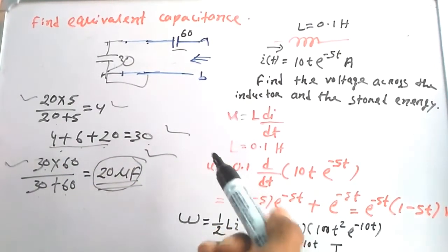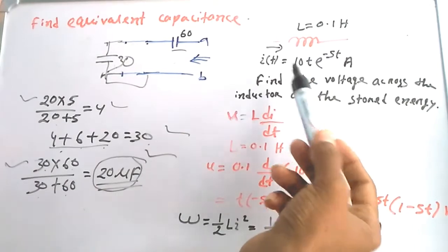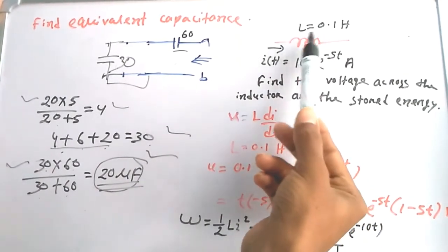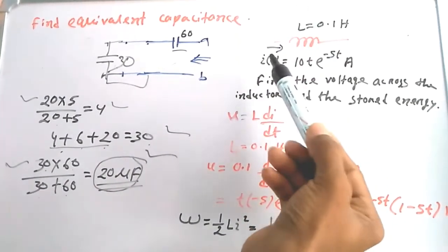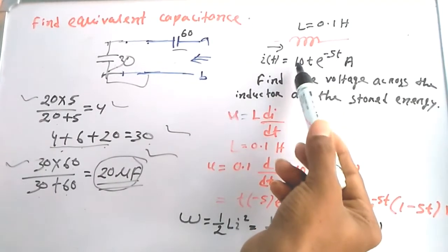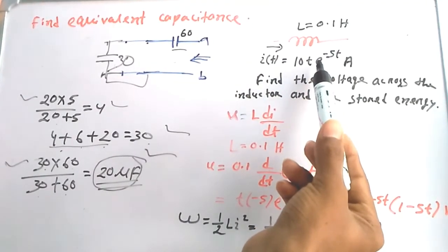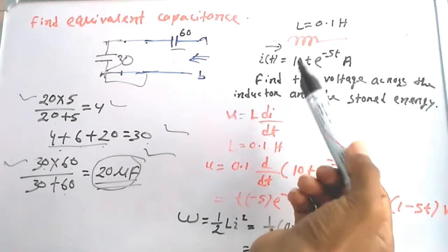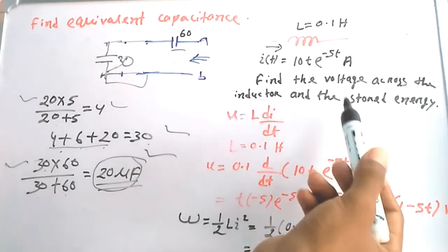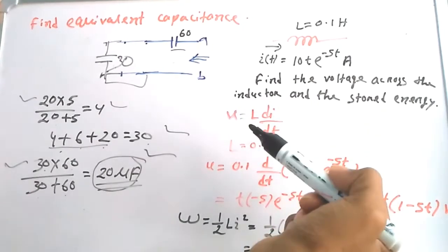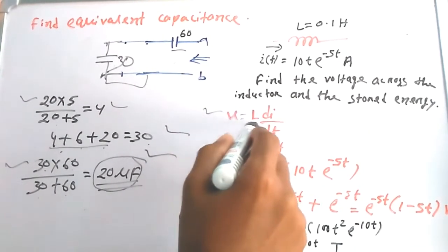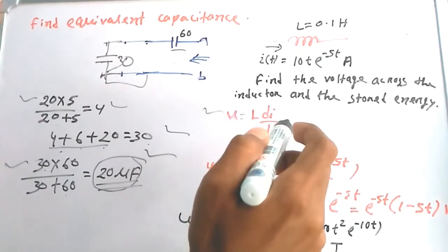In the next question, for an inductor with L = 0.1 H and current i(t) = 10t · e^(−5t) amperes, find the voltage across the inductor and the stored energy. The voltage across an inductor is given by V = L · di/dt.